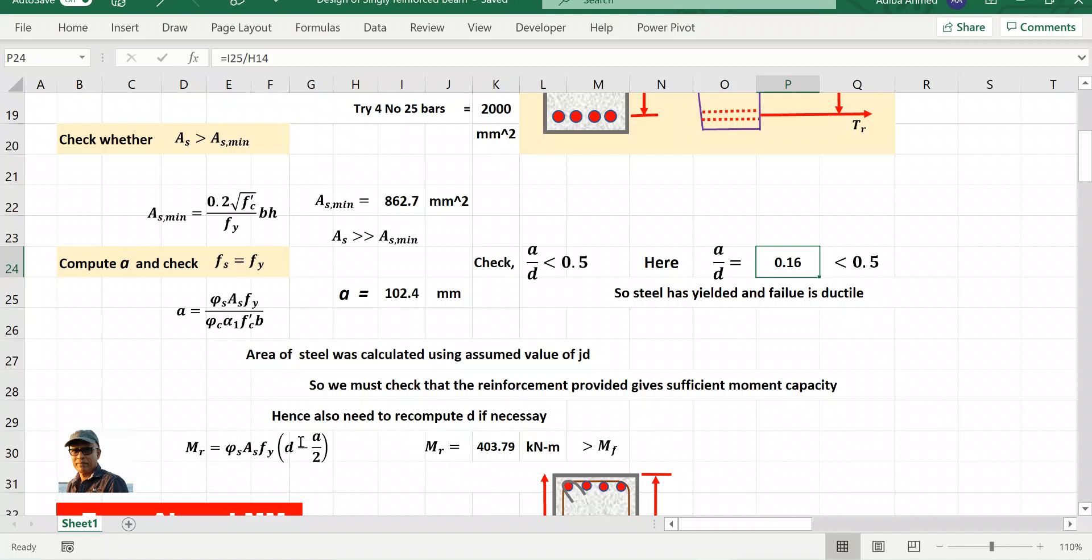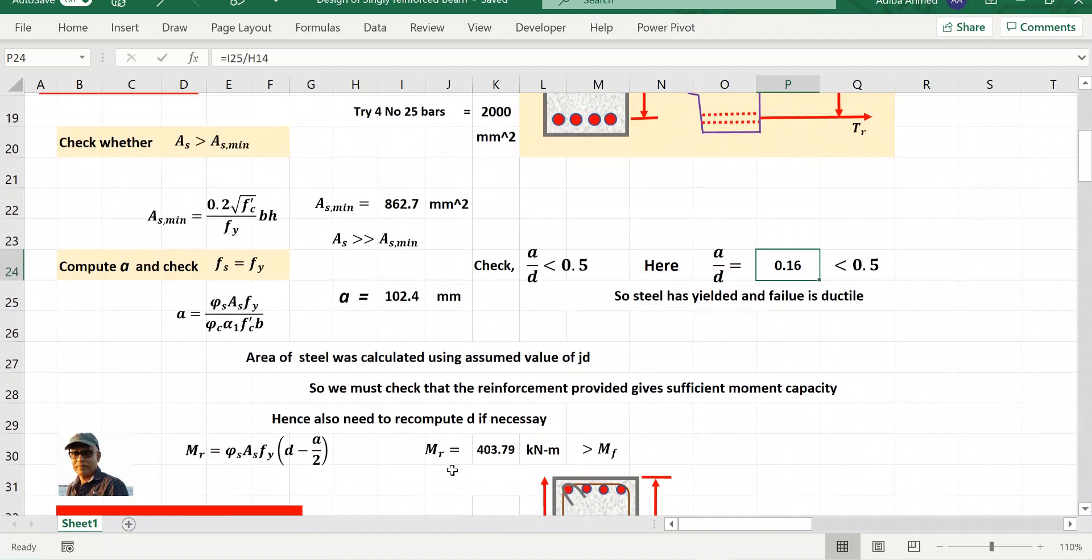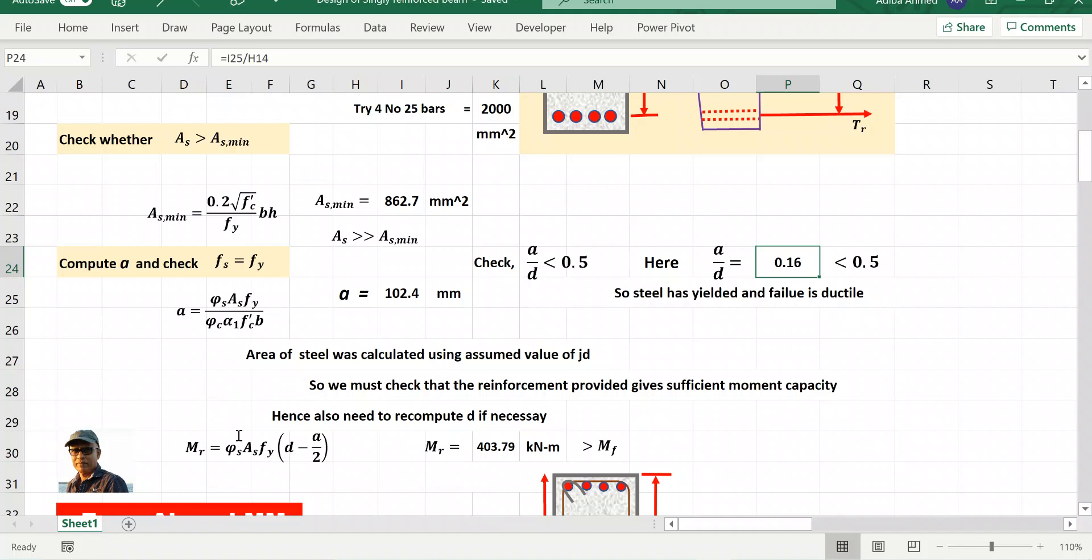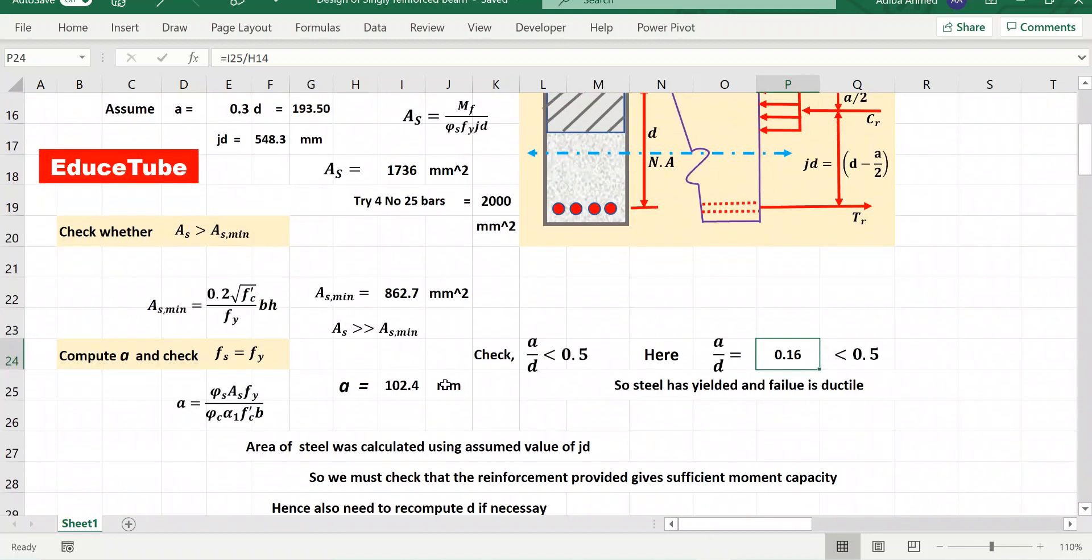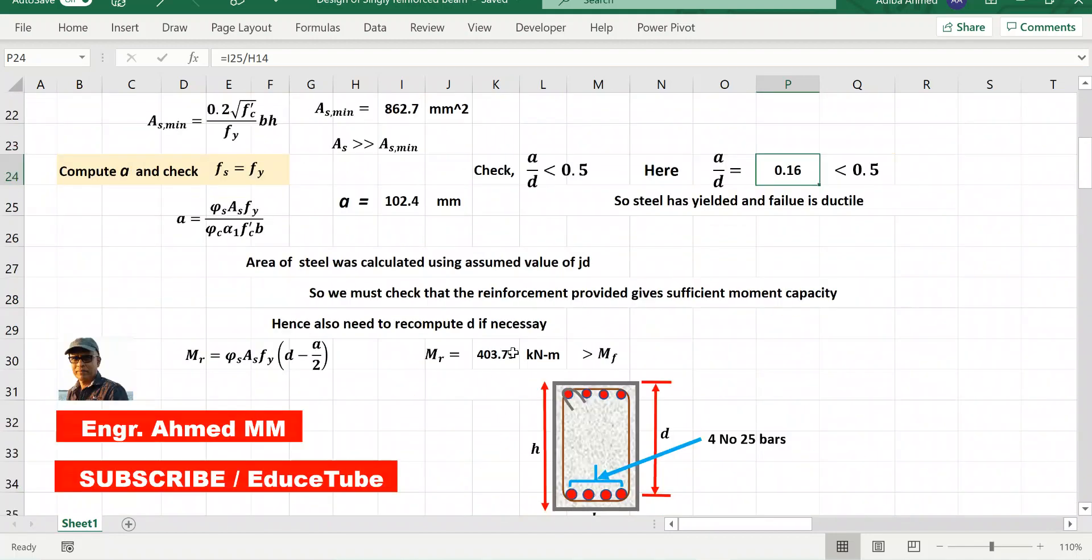So what formula we are using? This is the formula: phi_s As fy times d minus a by 2. We know d minus a by 2 means jd, so it is very easy formula. So MR I got 403.79. So what you can say, I wrote here greater than MF because our MF is 324, I am near about 400. So our beam can carry more than what factored load coming on the beam. So we are safe. That is very important.